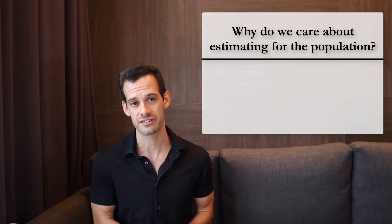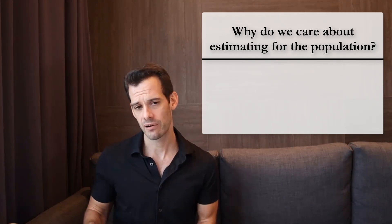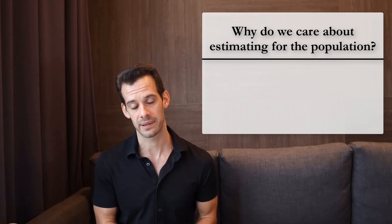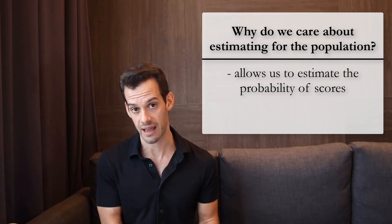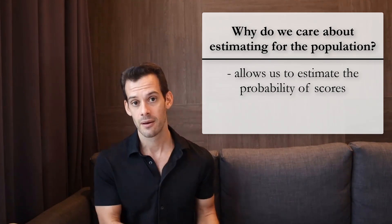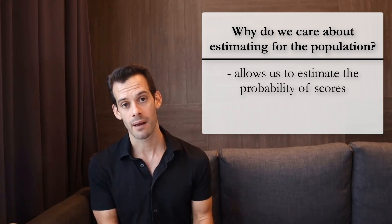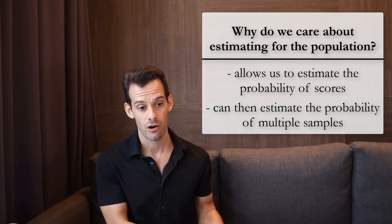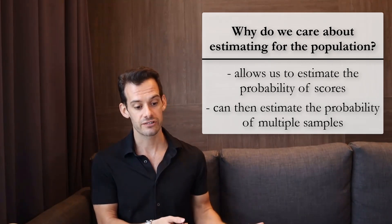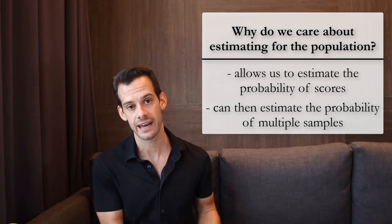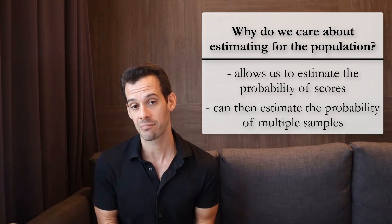A final question you might have is: why do we care so much about the population? Why not just stick to analyzing our samples? The reason is that if we can estimate the parameters for the population, we can think about the frequency of different scores in the population, and that means we can think about the probability of getting those scores in our samples. We can ask: what are the odds of getting a sample that looks like this based on what we know about the population? This is really important when comparing samples — if two samples differ, we want to know whether that difference is just random chance from drawing two samples from the population, or whether some intervention had an effect. In order to assess that, we need to know the odds of getting those samples from the population, which is why estimating population parameters is so important.